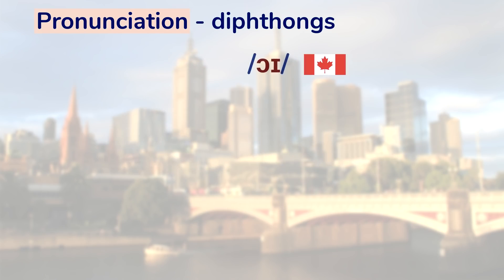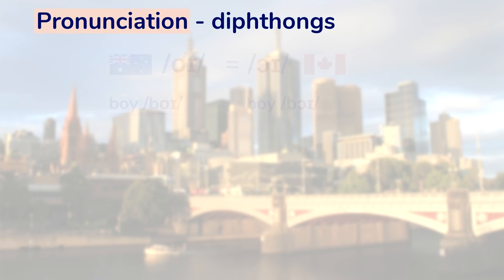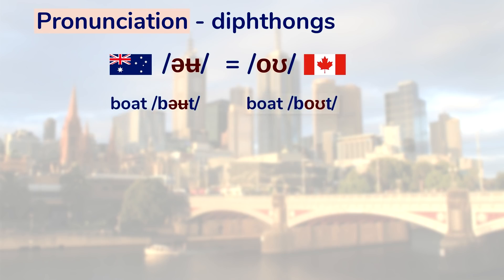There's also a diphthong that I pronounce as OI — Australians say something more like OI. 'Boy' vs. 'Boy' — the Aussie sound is less open. Another is the OH diphthong as in 'boat' — Australians say 'boat.'